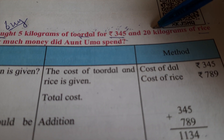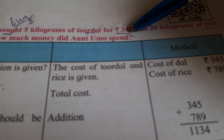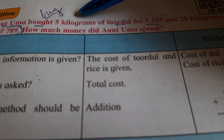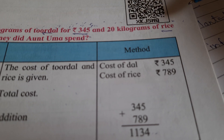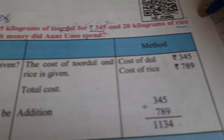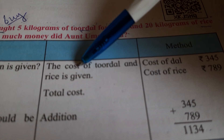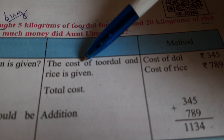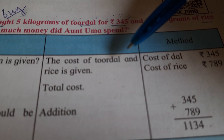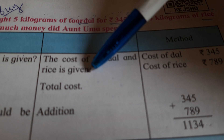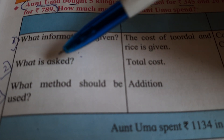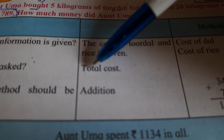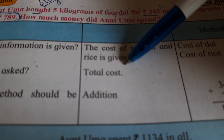The price is given — of turdal and rice. So what is given? The cost of turdal and rice is given. And what is asked? The total cost is asked — how much money did Aunt Uma spend?